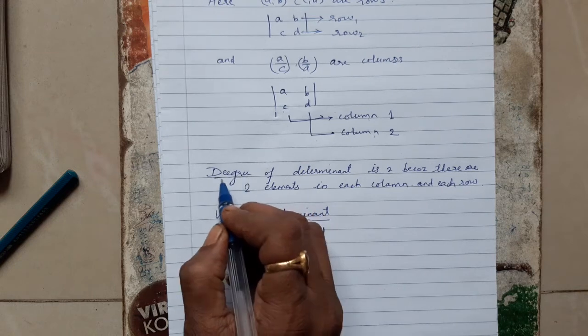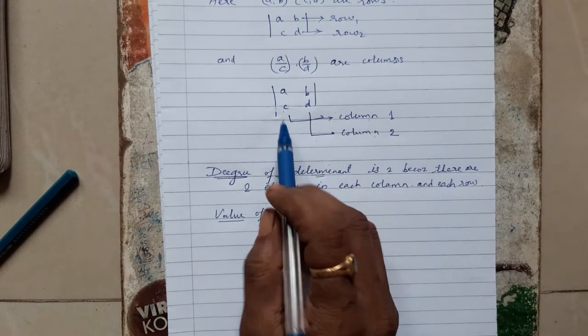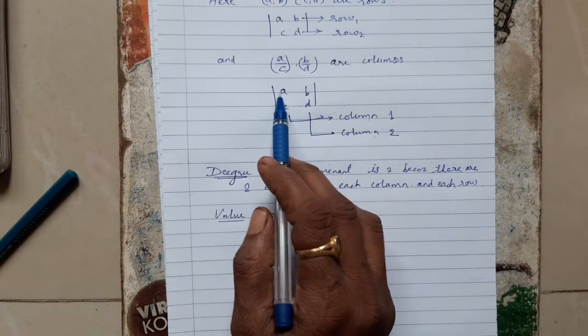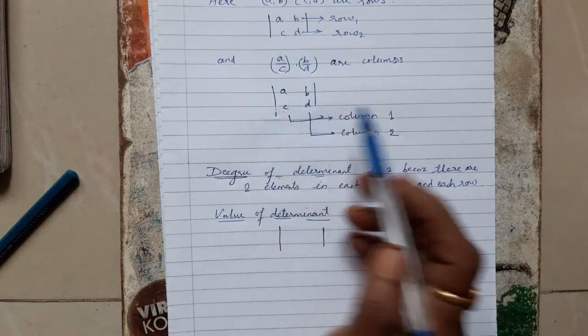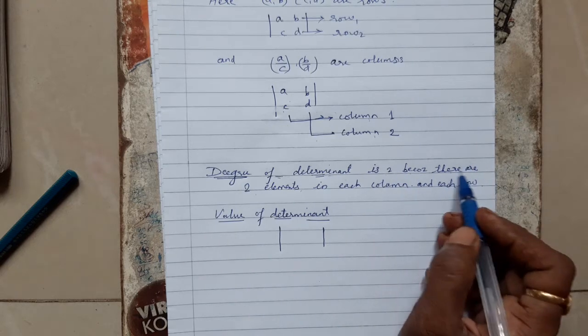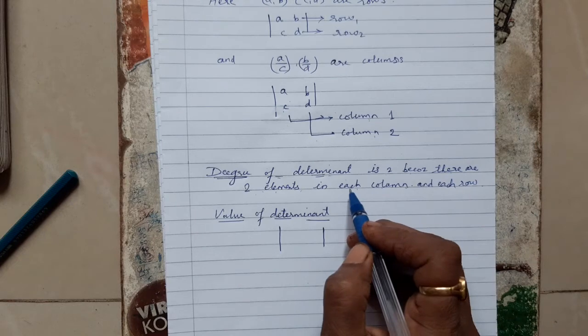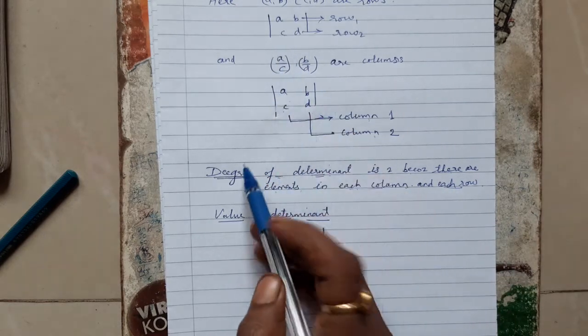Now we are going to see degree of determinant. What is degree of determinant? If you see here, there are two elements in each row and column. So the degree is two. The degree of determinant is two because there are two elements in each column and each row.